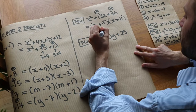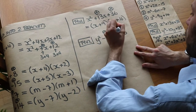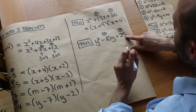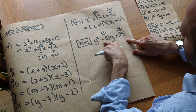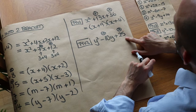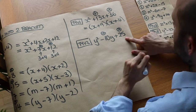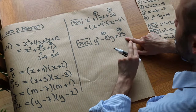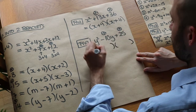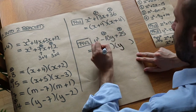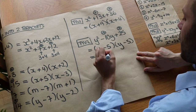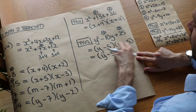Second test question: y squared minus 10y plus 25. We need two numbers that add to give minus 10 and multiply to give positive 25. Since the product is positive and the sum is negative, both must be negative. Minus 5 and minus 5 multiply to give 25 and add to give minus 10. So the factorisation is (y − 5)(y − 5), which can also be written as (y − 5) squared.